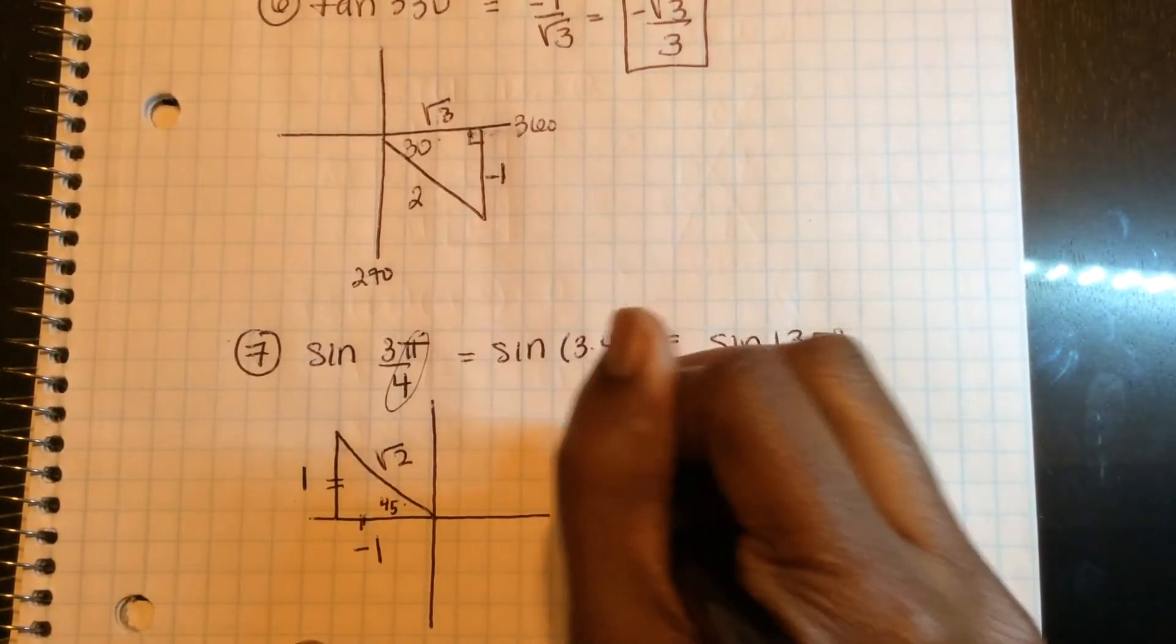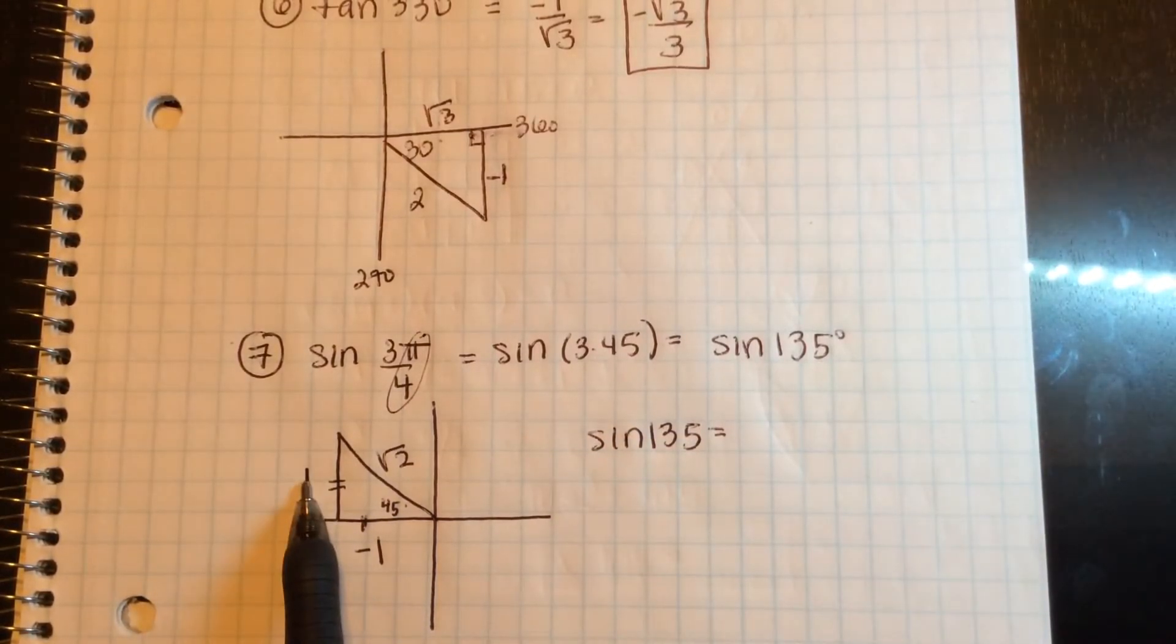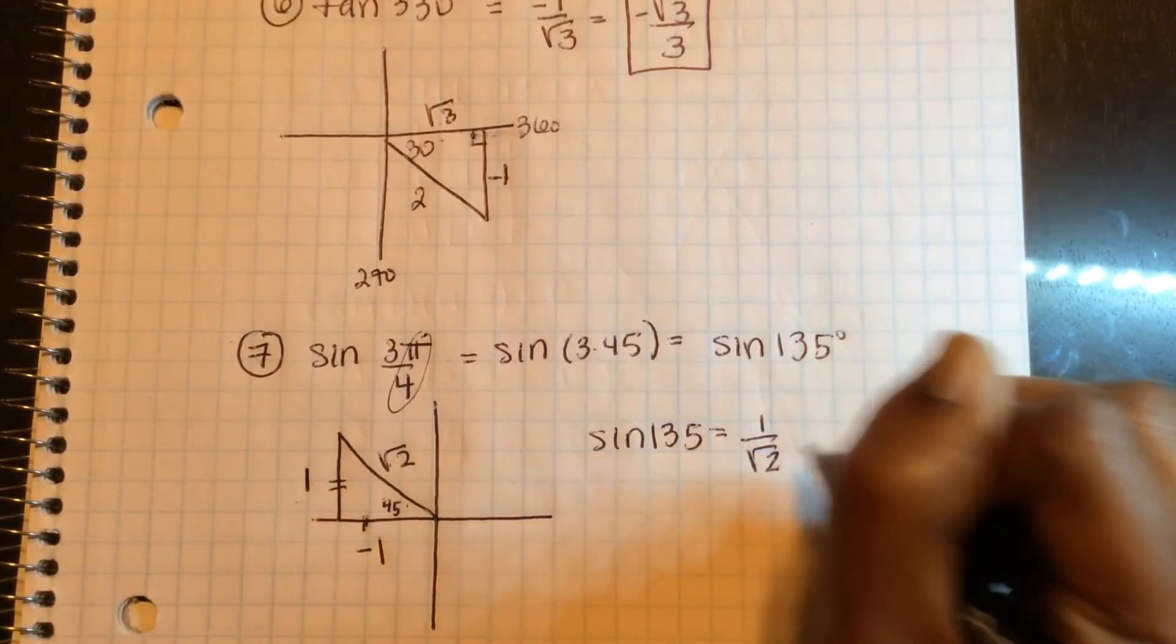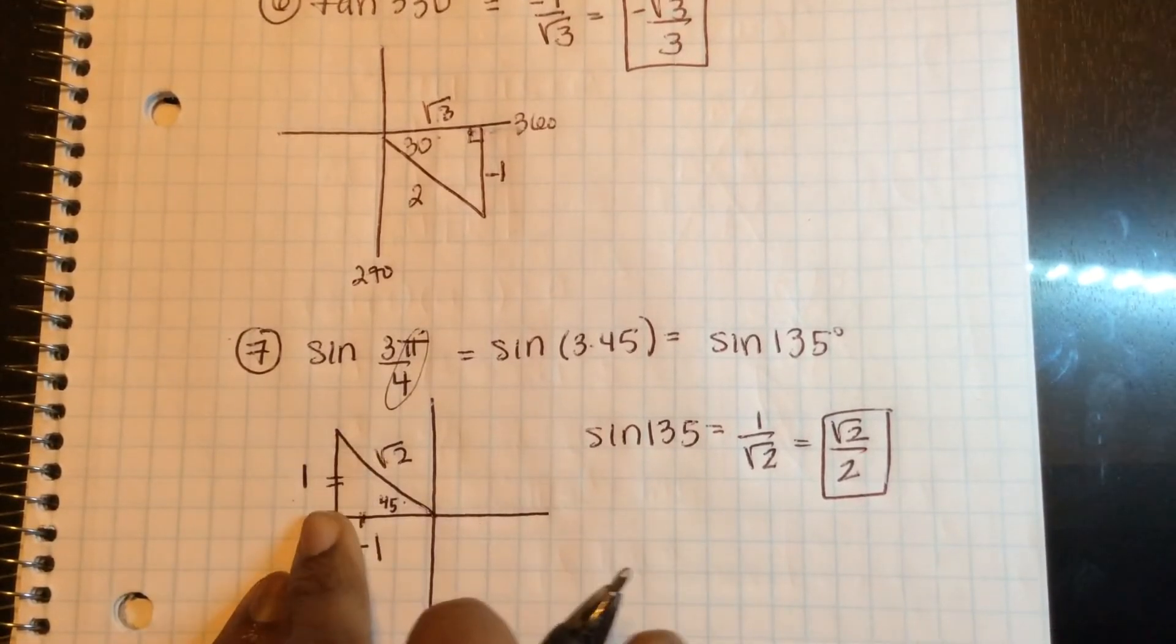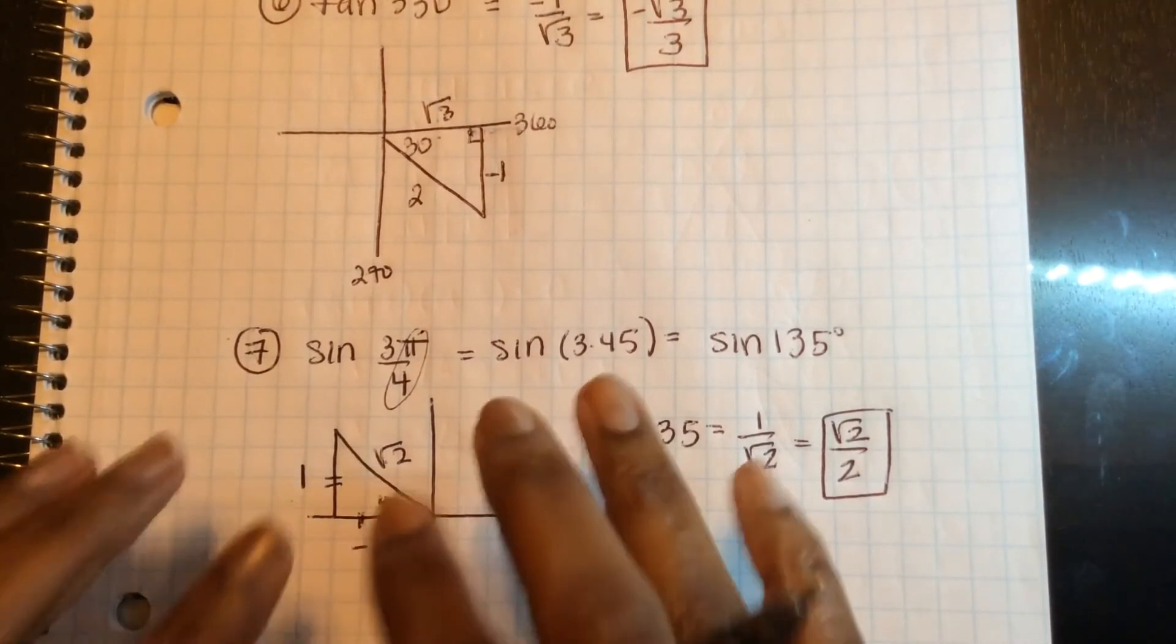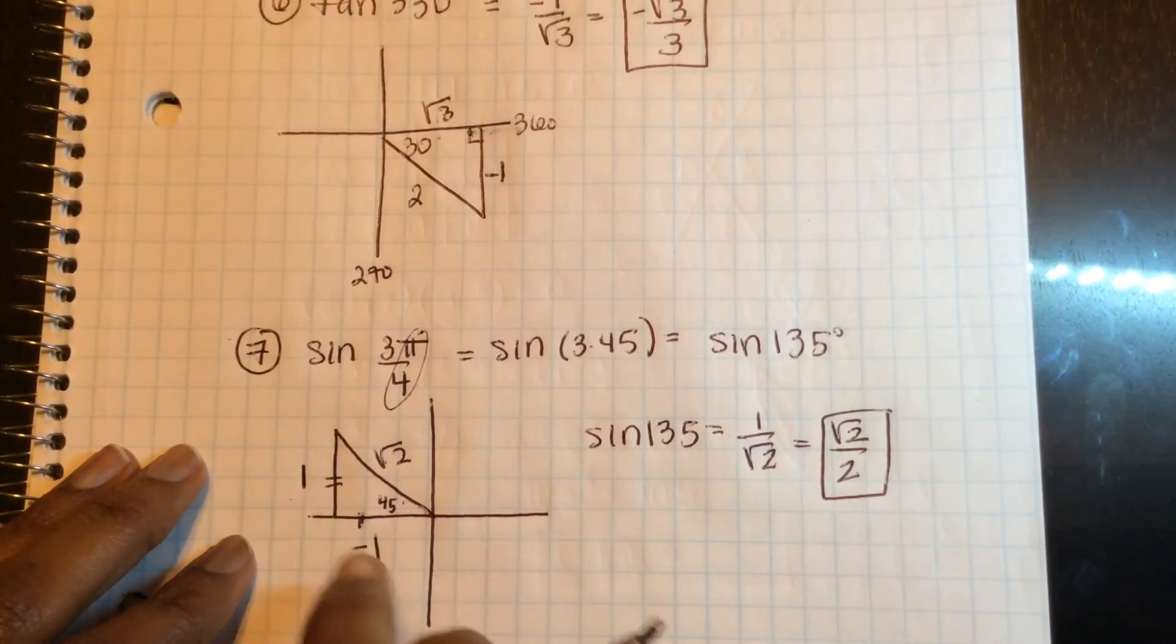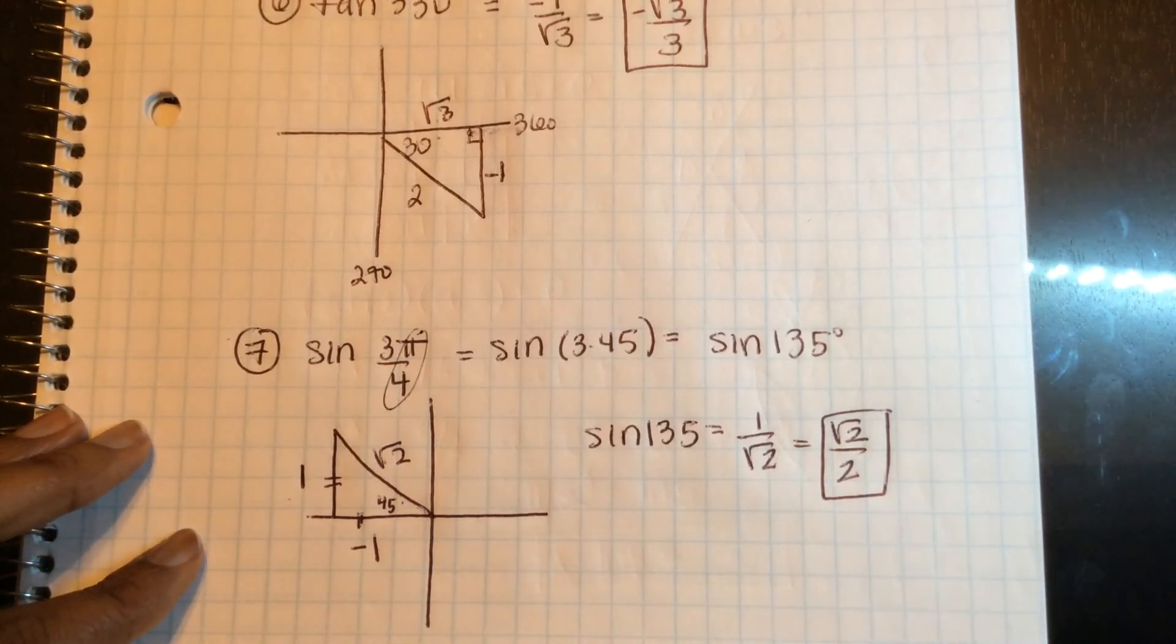So if I want sine of 135, it's going to be opposite over hypotenuse, 1 over square root 2, or square root 2 over 2. So if you think about drawing these special triangles within the correct quadrant and keeping track of where your sine should be negative or positive, it's a much easier connection.